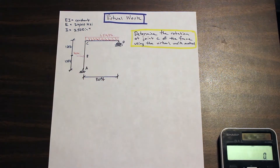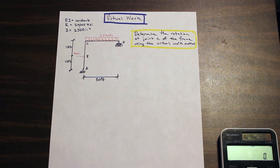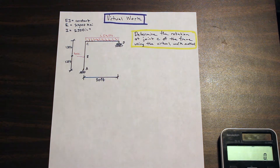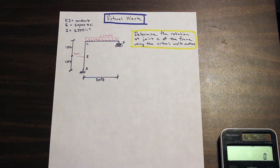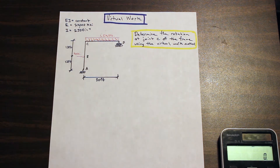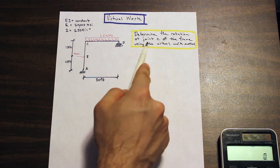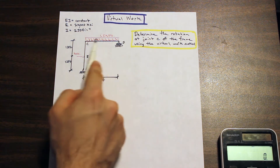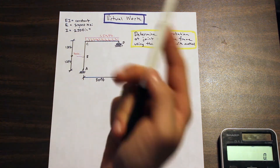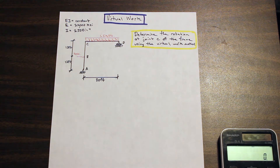Hey everyone, Fred here from AF Math and Engineering. This video is going to cover virtual work. We're going to talk about the method of virtual work, what kind of problems you can solve with it, and then we're going to solve a frame using the virtual work method to determine the rotation at joint C. So let's go ahead and jump right into the problem.